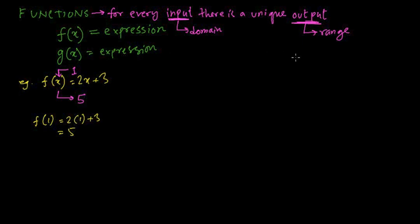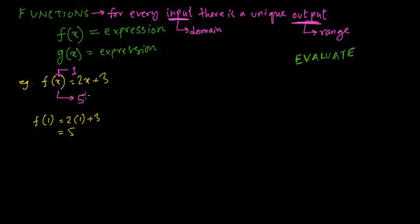The first thing we need to know is how to evaluate a function. In order to evaluate a function, you put the input value — the domain — into the expression, and the value you get is the output, the range. Here the input is 1 and the range is 5. Since you get exactly one output value, this is a function.